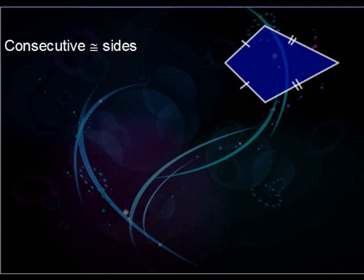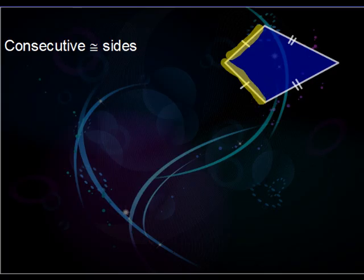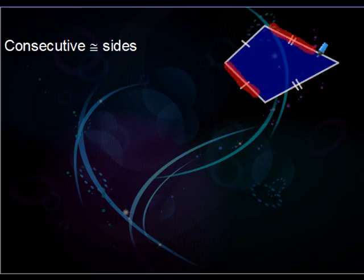With consecutive congruent sides, if you have one side, its matching side is going to be right next to it, so together they form an angle. The same thing applies to the other pair — they're not going to be opposite one another; they will make an angle together. Another key characteristic of kites is that they do not have parallel sides.